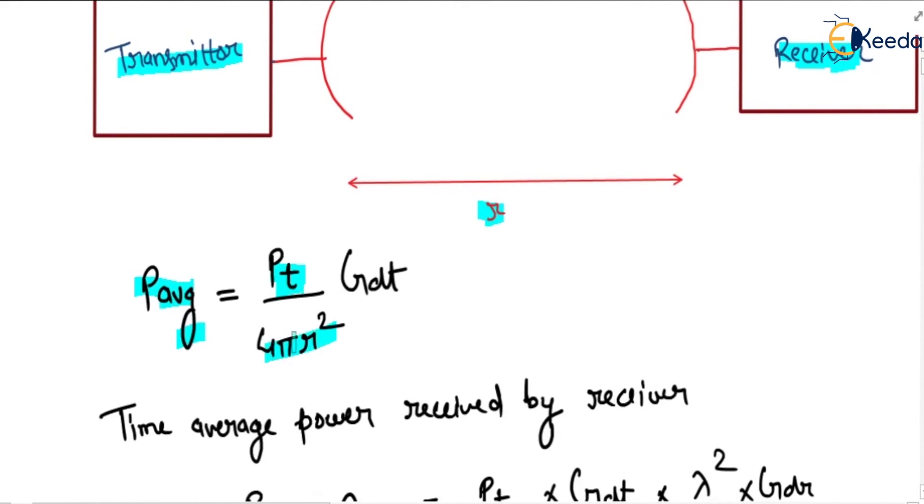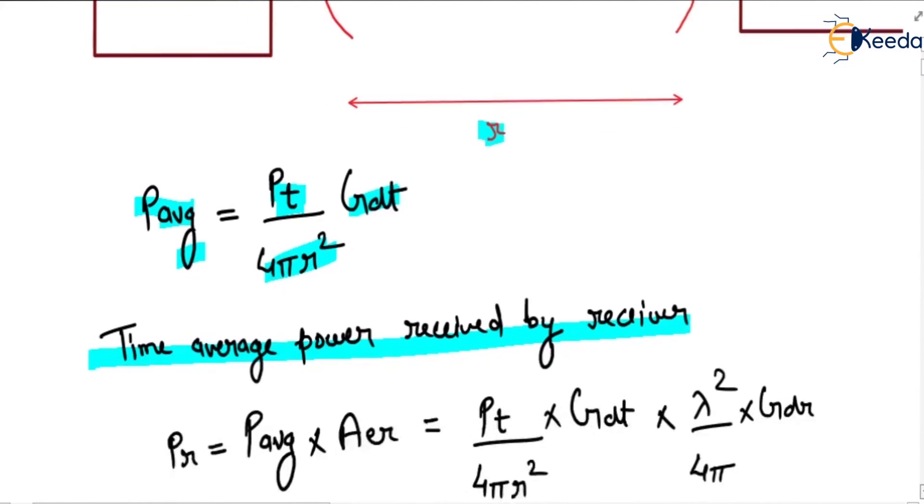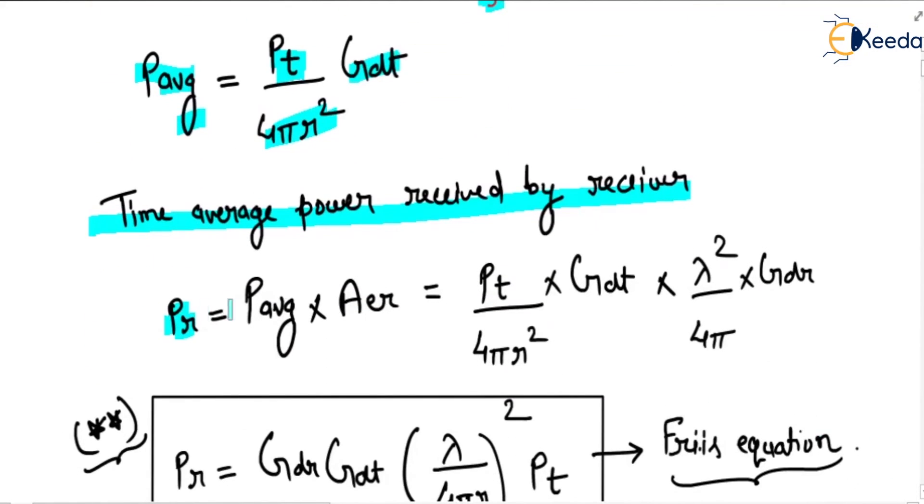Average power density is PT/(4πr²) × GDT. Time average power received by the receiver is PR = P_avg × AER = PT/(4πr²)